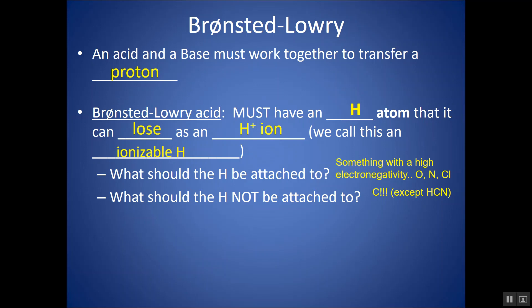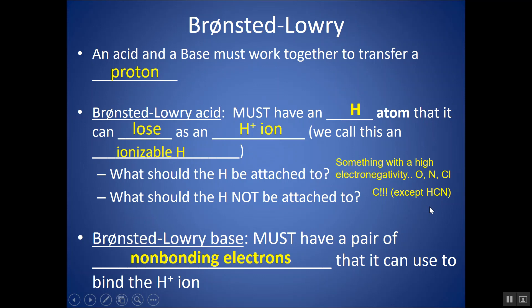When looking for which H ionizes, don't pick the H connected to a C — the only exception is HCN. A base must have nonbonding electrons or lone pairs that it can use to bind to the H+, because that is the site the H+ would attach to, and that's how a base accepts an H+.